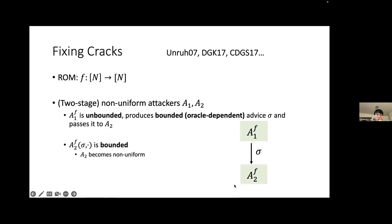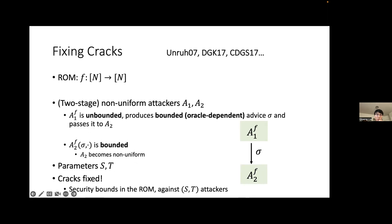We care about two parameters: s, the size of the advice provided by A1 (analogous to the rainbow table size), and t, the running time of the online adversary A2, or equivalently the number of queries A2 makes to the random oracle.